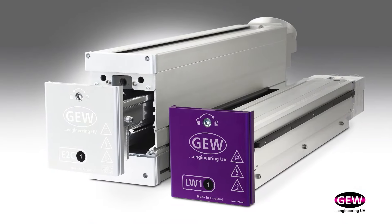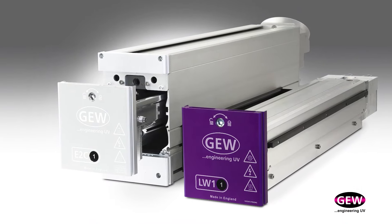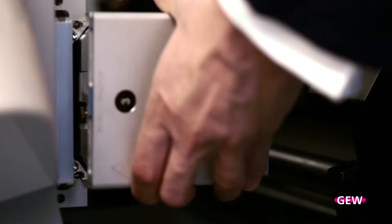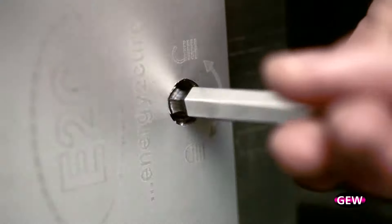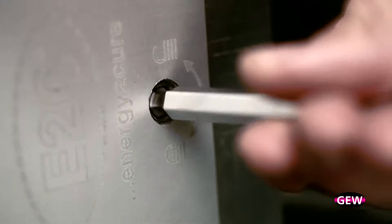The Arc Lamp and LED UV light sources are both mounted to a cassette which is inserted into the lamp housing and locked for safe operation with a single allen key fastening.